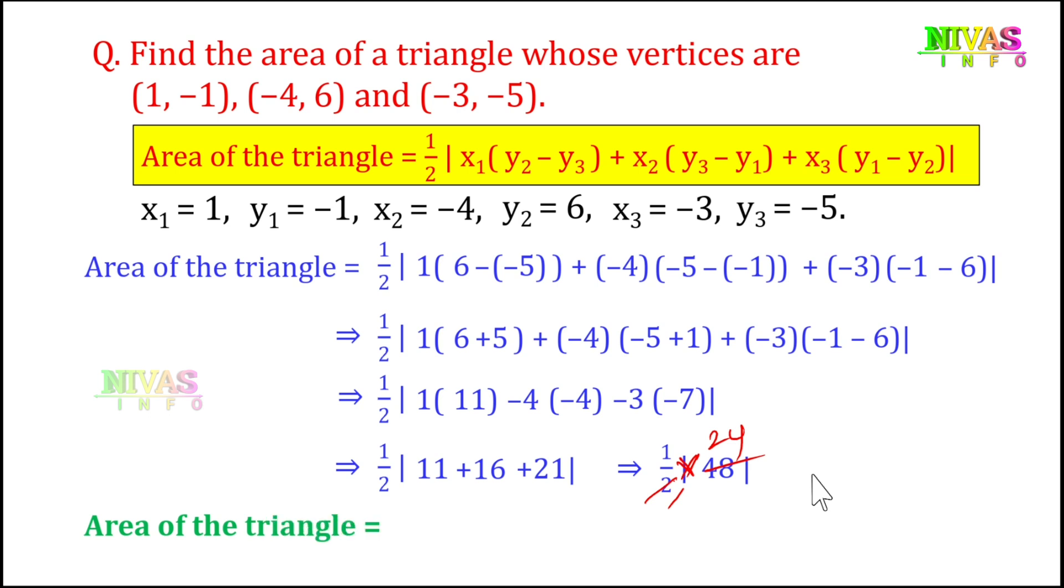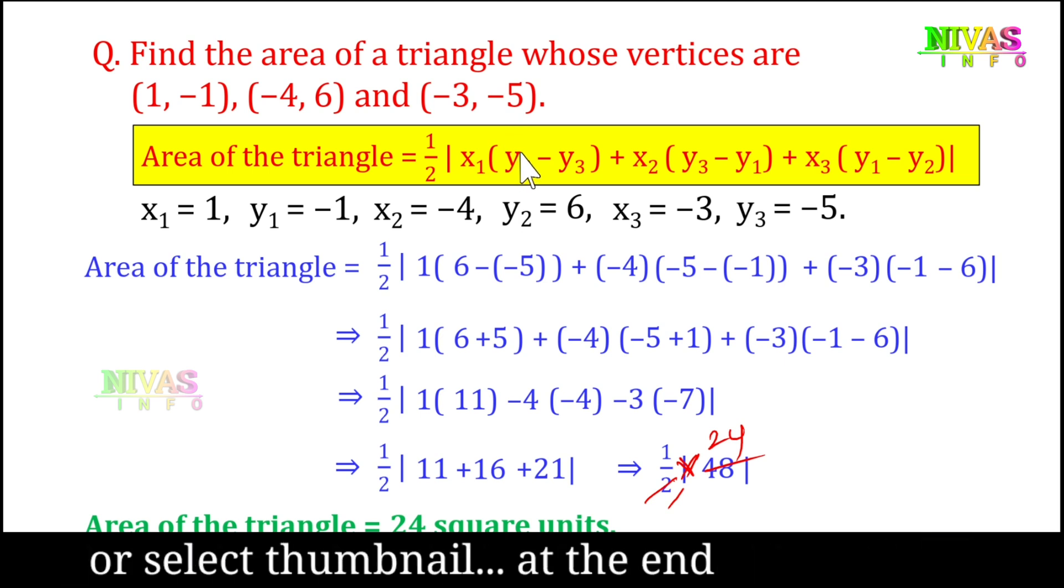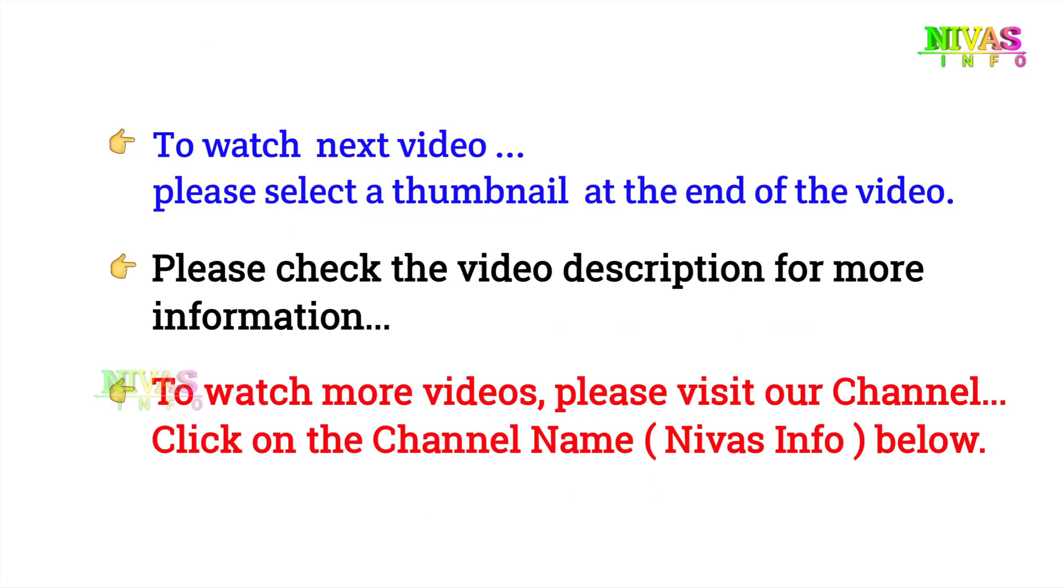This is the answer. The area of triangle is 24 square units. So when we use coordinate units, we use this formula. This formula is very easy to solve. Thank you.